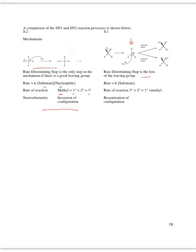For SN1, the rate equals the concentration of the substrate only, since the rate-determining step is loss of the leaving group. Reactivity order is tertiary > secondary > primary > methyl, since we must form a stable carbocation. If there is a stereocenter, racemization of configuration occurs.